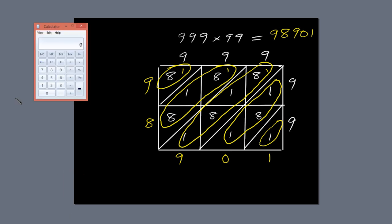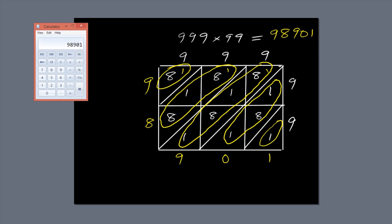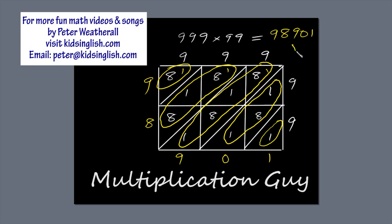I'm going to check the answer on my calculator, but I'm allowed to do that because I'm not a contestant in multiplication millionaire. 999 times 99 equals 98,901. So the answer's correct. That's why they call me The Multiplication Guy.